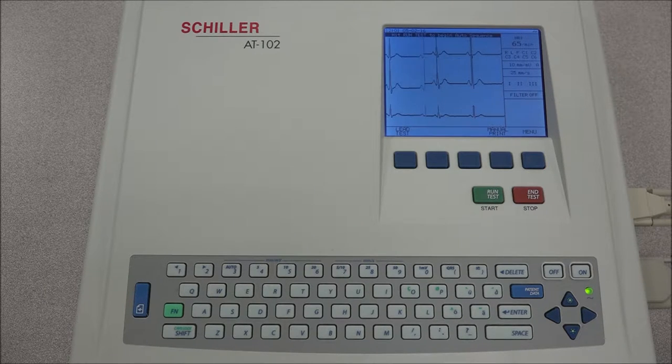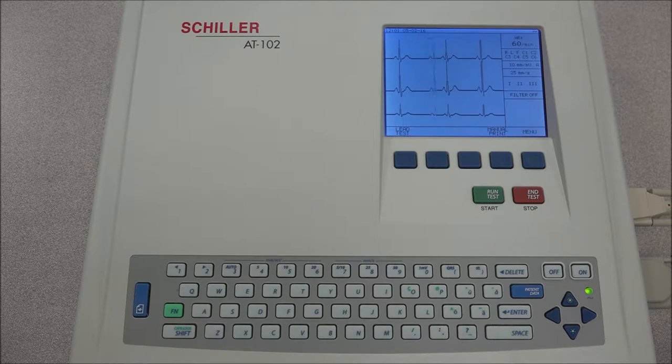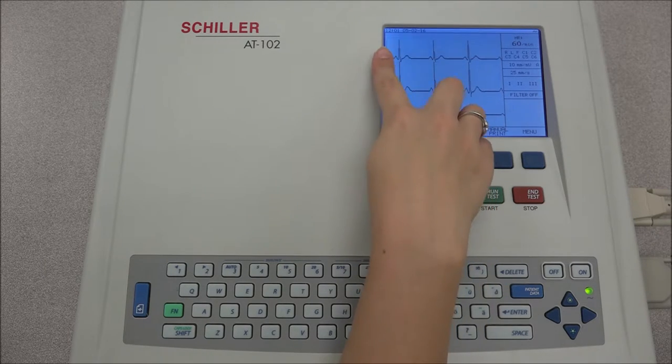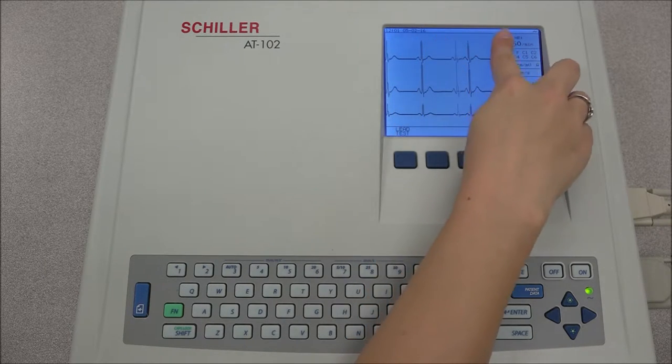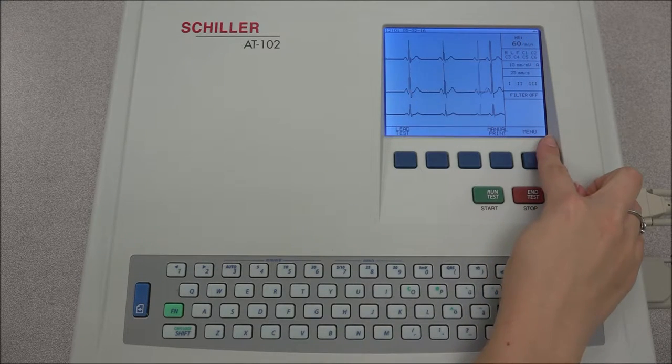The display on the screen will vary depending on the task that is being performed. Keeping that in mind, the top and bottom line will continuously display the same information. On the top line, we will see the date, time, the name of the patient, and the state of the battery. The bottom line will always display the soft key options.